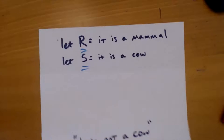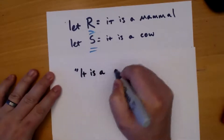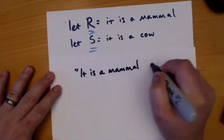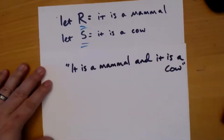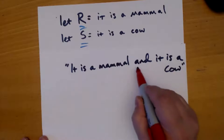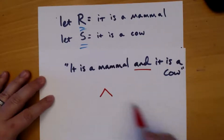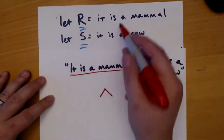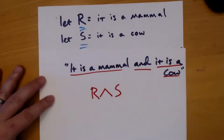So I take a look at my sentence and I find out what symbol I should be using. I see that I've got an 'and,' and the 'and' symbol is the caret. 'It is a mammal' — that's R — and 'it is a cow' — that's S. So R caret S is your answer.